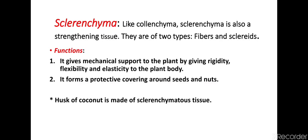The next type of simple permanent tissue is sclerenchyma. Like colenchyma, sclerenchyma is also a strengthening tissue. It is of two types: fibers and sclereids. The functions of sclerenchyma are: it gives mechanical support to the plant by providing rigidity, flexibility, and elasticity to the plant body. It also forms a protective covering around seeds and nuts — the husk of a coconut is also made of sclerenchyma tissue.